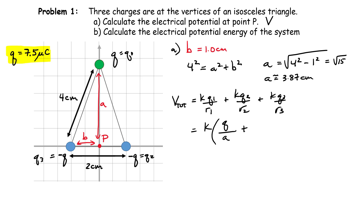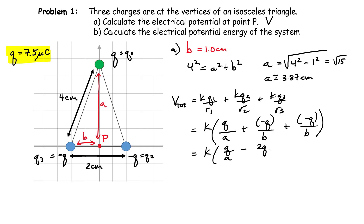We can combine the last two terms. That gives us KQ times (1 over A minus 2 over B). I'll factor out Q and substitute numbers at the very last step. Plugging in: K is 9 times 10 to the 9, Q is 7.5 times 10 to the minus 6 coulombs, A is 3.87 centimeters converted to 0.0387 meters, and B is 1 centimeter, or 0.01 meters.